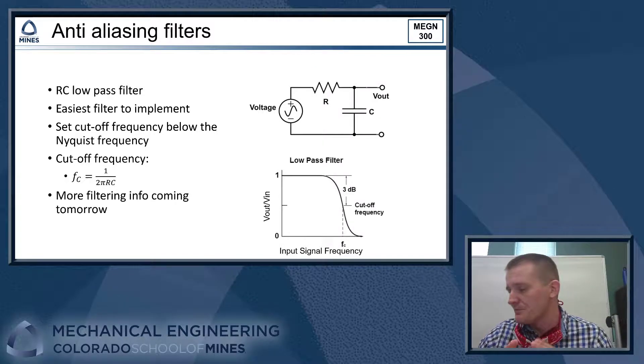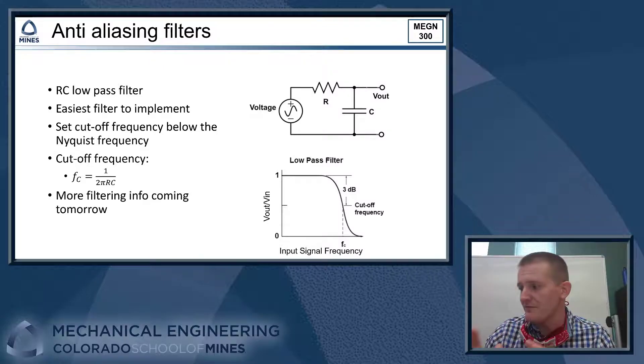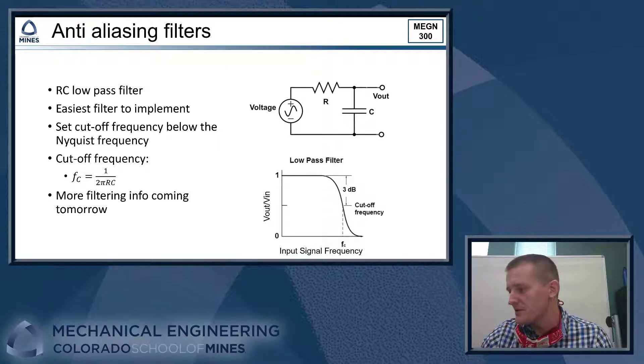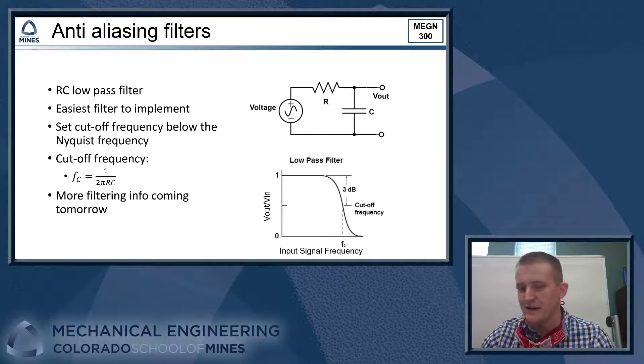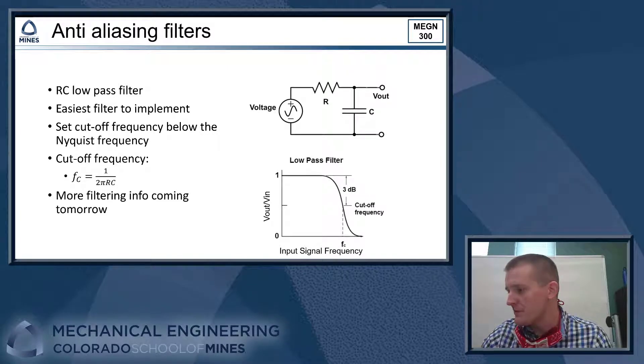And we want to make sure that we get rid of all those high frequency components. So we always set the cutoff frequency just a little bit below Nyquist. And that can give us a high degree of confidence that we're removing all of our high frequency components that would become aliases. So we'll have a separate video where we'll talk more about how we implement filters and some of the different types of filters that you can use.